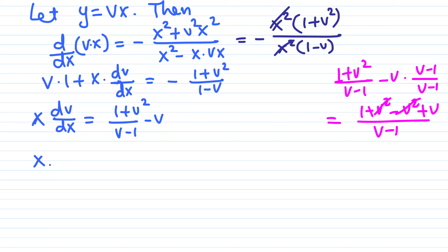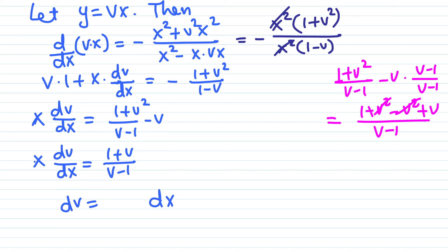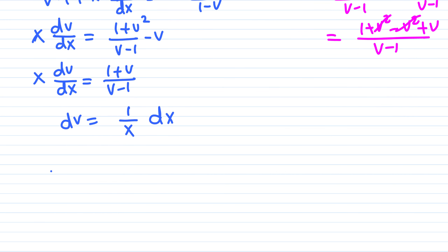So we have x dv over dx equals one plus v over v minus one. This is now separable — we can put the function of v and dv on the left side and one over x and dx on the right side. Moving terms by cross-multiplying gives v minus one over one plus v dv equals one over x dx.